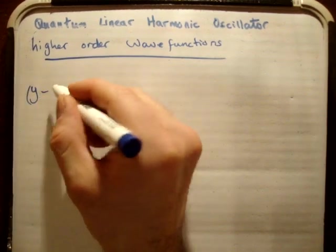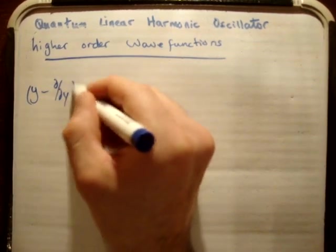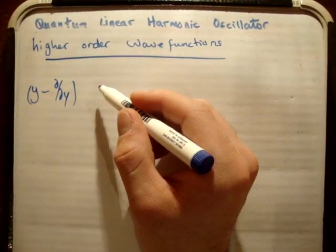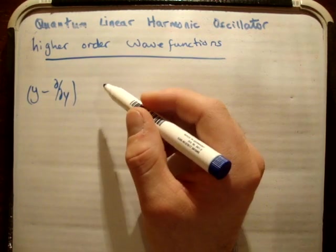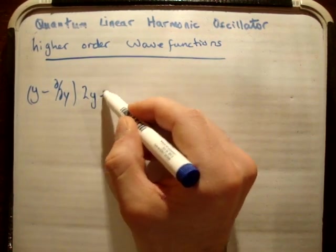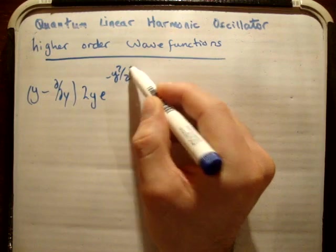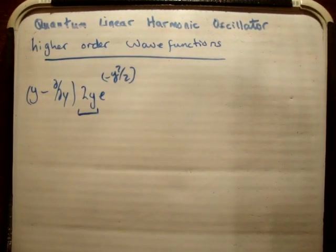So what I'm going to do is apply my raising operator y minus d/dy onto my wave function that I got of u1 of y. We said that u1 of y was 2y e to the minus y squared over 2. Now it's important to notice here that this is unnormalized. You need to use your unnormalized wave functions here.